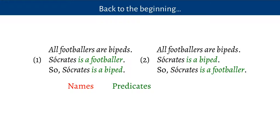Our arguments contain names and predicates, but there's one other bit. If you look at the first premise in both cases, it contains the predicate 'it's a footballer' and the predicate 'it's a biped', but it contains something else that combines them — it's not a name. It's what we call a quantifier. So 'all', in 'all footballers are bipeds', is a quantifier. It produces a sentence out of predicates without having to involve names — it doesn't name any individual thing, it's relating predicates together.